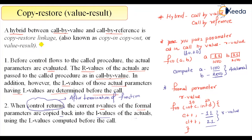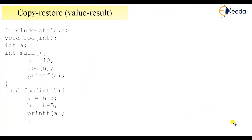The sequence of events is the most important part of call by copy restore. If you change the sequence, the whole thing will be disturbed and the answer will not be correct. Now let's see an example of call by copy restore. I'll also show how this parameter passing works in the case of call by reference, so we can compare both mechanisms.